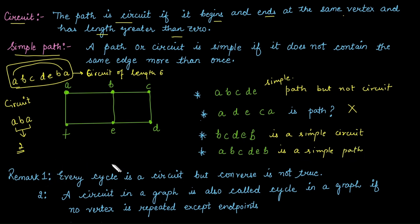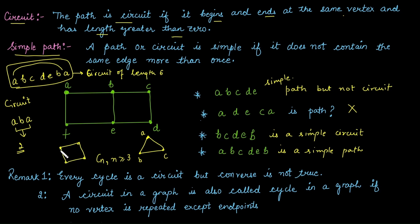There are two remarks. Every cycle C_n, where n ≥ 3, is a circuit, but the converse is not true. For example, a cycle of length 3: starting from a vertex, moving to b, then c, and back to a — this is a circuit and also a simple circuit. Similarly, C_4 gives a circuit of length 4, which is also a simple circuit.